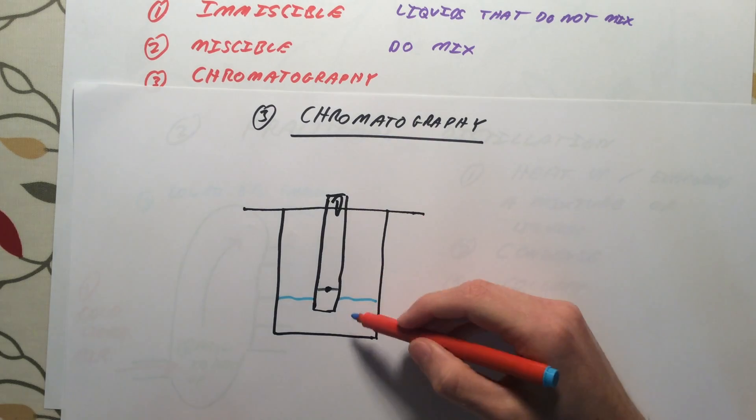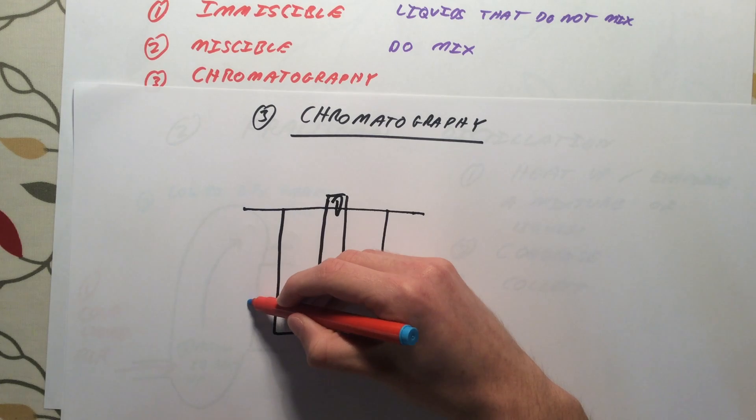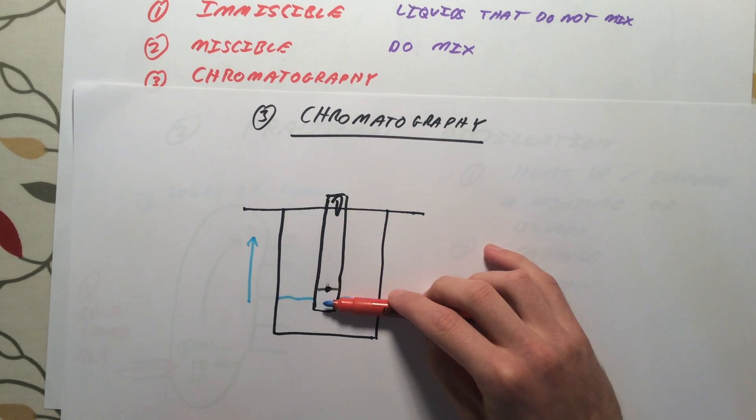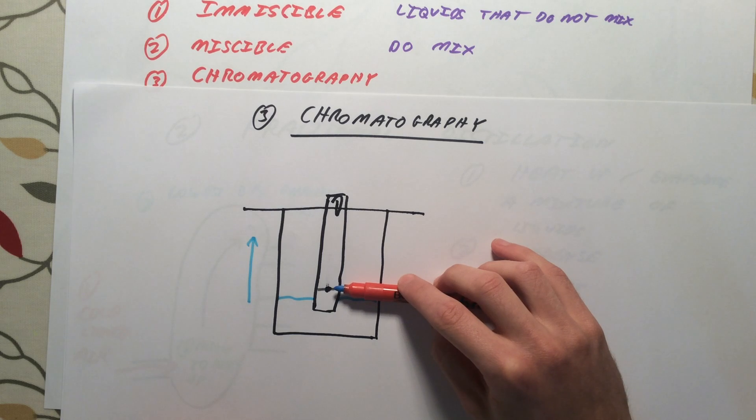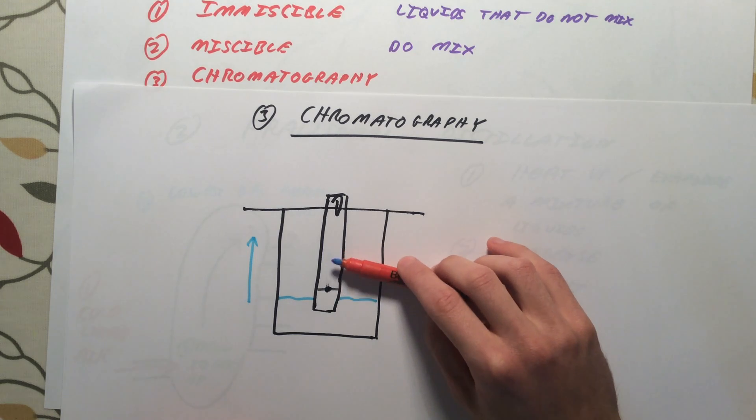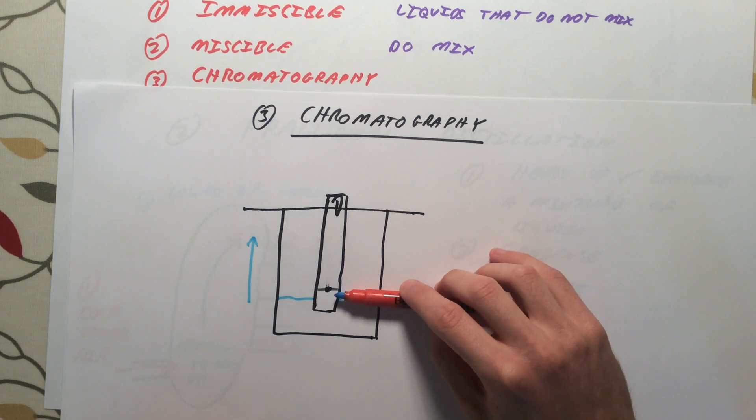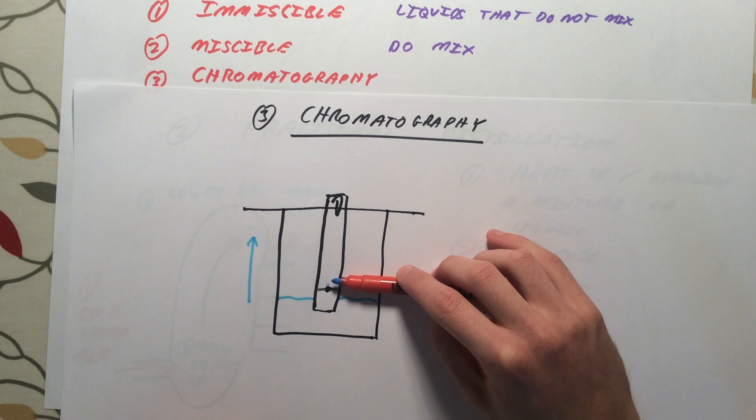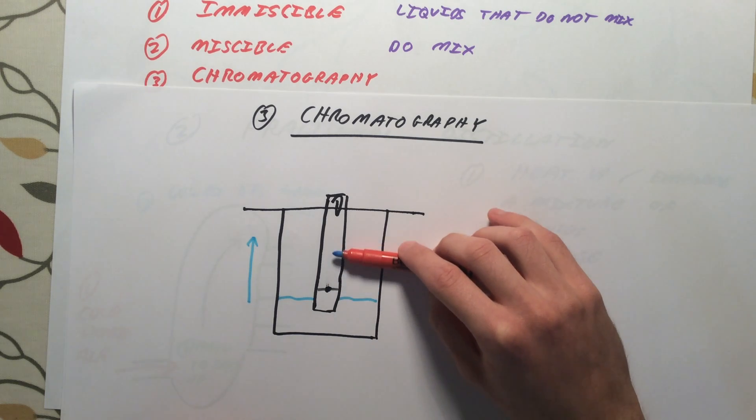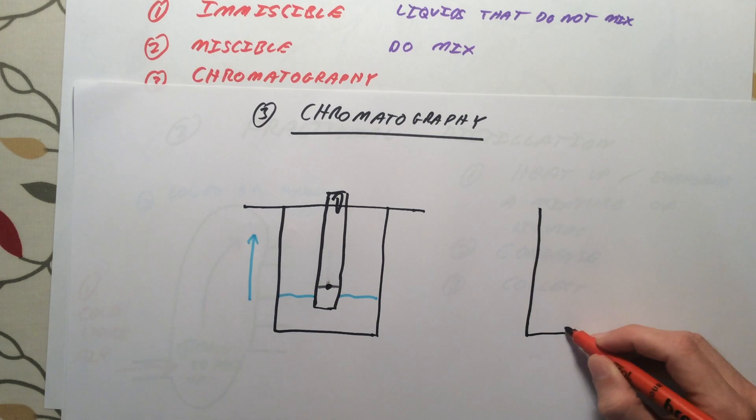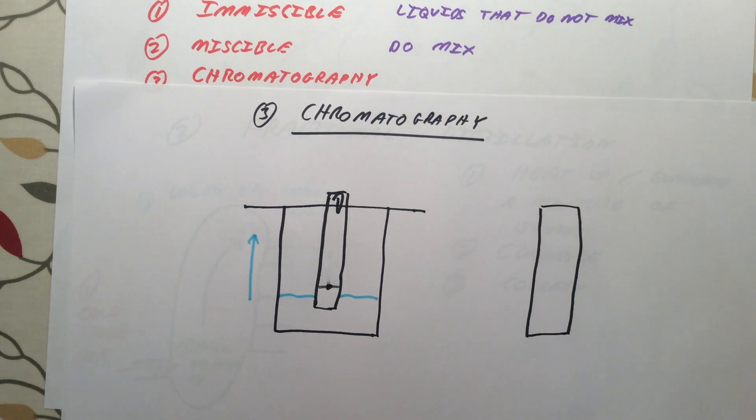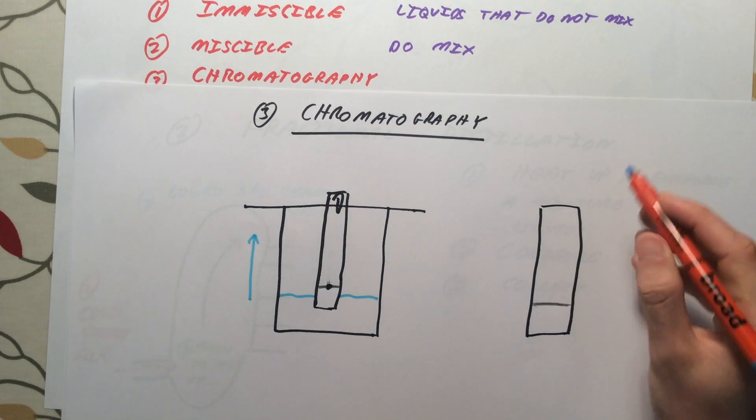So as this process carries on, the water is going to rise up the filter paper. And as it does so, it is going to start to separate out the colours that make up this ink. What happens is the different chemicals in the ink will actually be attracted at different strengths to the filter or chromatography paper. The ones that are attracted very strongly to it will move up slowly up the paper. The ones that are attracted less strongly will separate out more quickly. And when we finish this experiment, we might get something that looks like this. The reason we did a pencil line to start with is because the pencil will not move. So, this is going to be our reference point here.